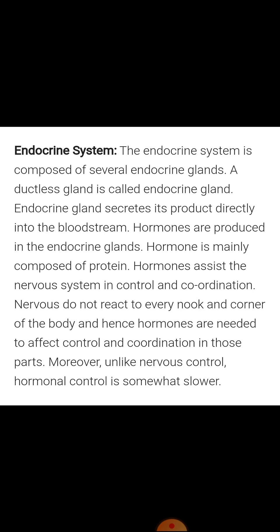So first, what are glands? Glands are structures that secrete a specific substance in the body. These are secretory structures, and glands are made up of a group of cells or tissues.